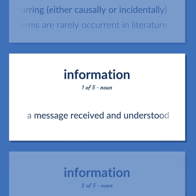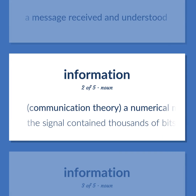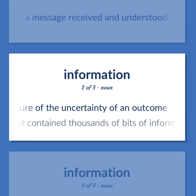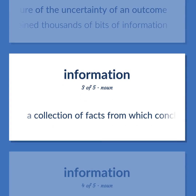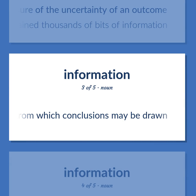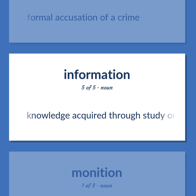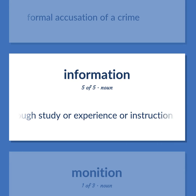Information: a message received and understood. Communication theory: a numerical measure of the uncertainty of an outcome — 'The signal contained thousands of bits of information.' A collection of facts from which conclusions may be drawn. Formal accusation of a crime. Knowledge acquired through study or experience or instruction.